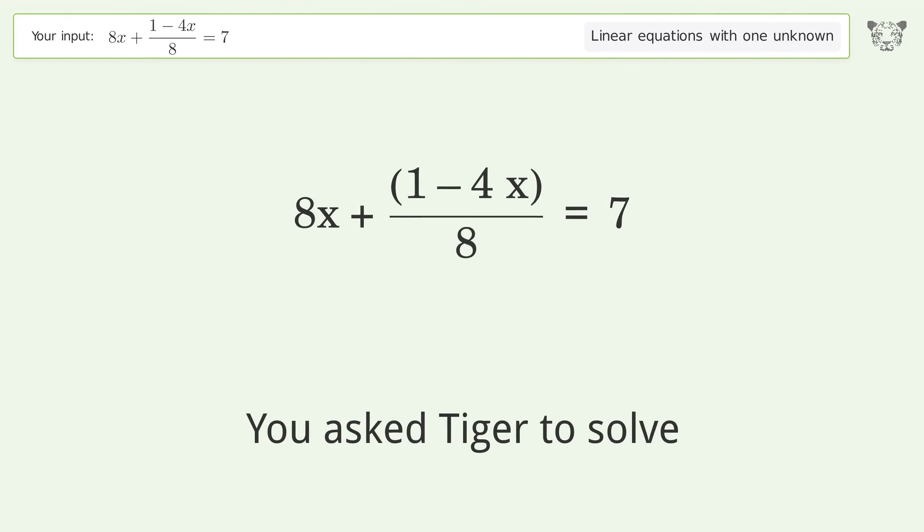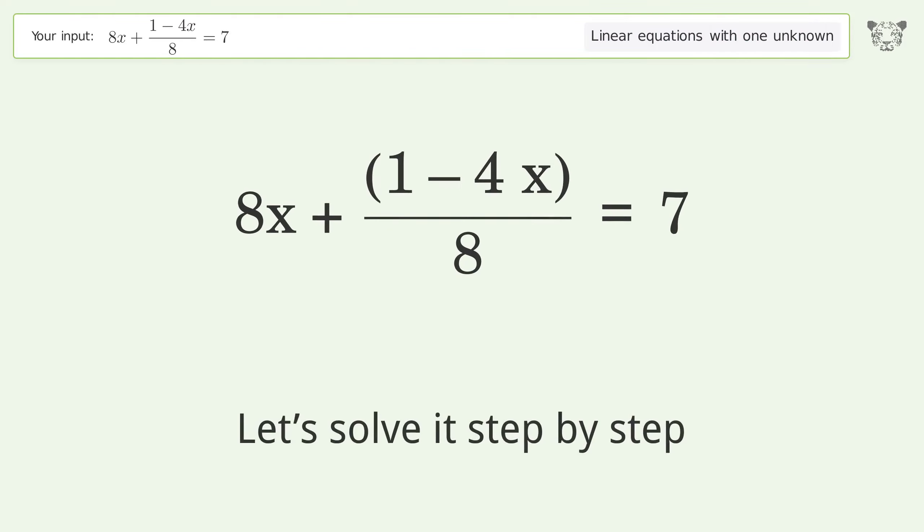You asked Tiger to solve this, which deals with linear equations with one unknown. The final result is x equals 11 over 12. Let's solve it step by step.